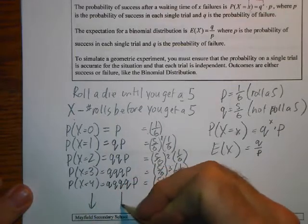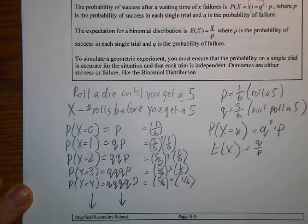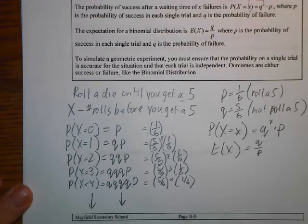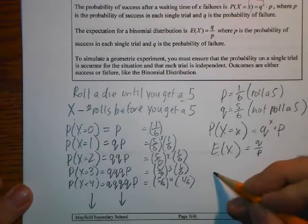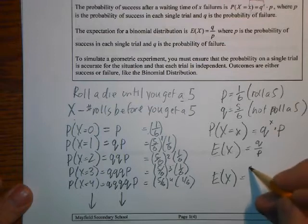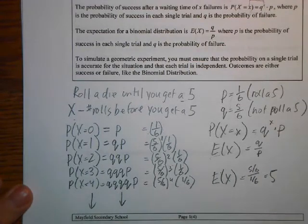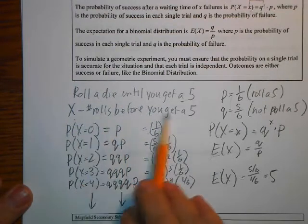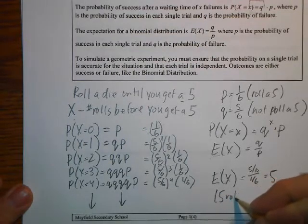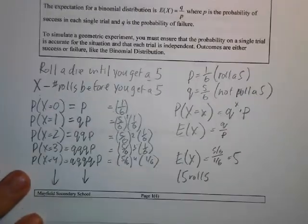This distribution never really ends, and that's what makes it very unlike any other probability distribution. Those other distributions all have a finite number of values the random variable can be, whereas this one does not. Using the expected value formula, E(X) = Q/P = (5/6)/(1/6) = 5. That tells you the expected number of rolls before you get a five is five — so you'd expect to roll five times before getting a five.